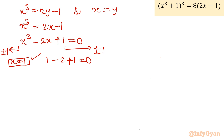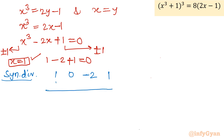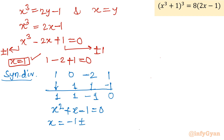To find the remaining two roots, we use synthetic division with root x = 1 on x³ − 2x + 1. The coefficients are 1, 0, −2, 1. Carrying out the division yields the depressed quadratic x² + x − 1 = 0. Applying the quadratic formula gives x = (−1 ± √(1 + 4)) / 2 = (−1 ± √5) / 2.